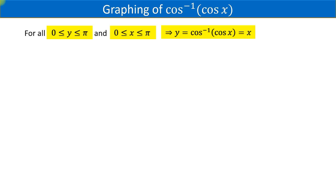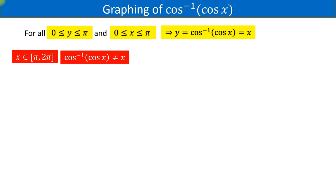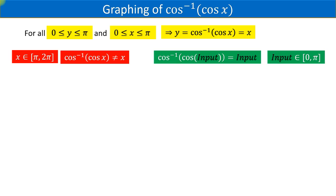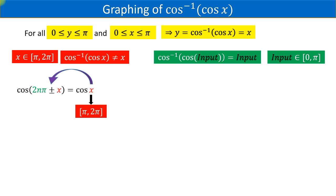We will use the above result to draw the graph of cos inverse of cos x over its entire domain. When x belongs to the closed interval pi to 2 pi, cos inverse of cos x is not equal to x, because cos inverse of cos x equals x is true only when its input belongs to the principal domain of cosine x. This issue can be resolved by using the fact that cos(2n pi plus or minus x) equals cos x. Since x is running from pi to 2 pi, we will manipulate x in the form 2n pi plus or minus x to bring its value into the closed interval 0 to pi, which is the principal domain of cosine x.